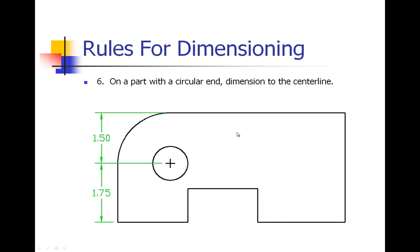Number six: on a part with a circular end you should dimension to the center line. So we put our center mark in and we have a little gap there, and we should dimension to the center line. So we would have to delete out that little piece of center line and go right to that center mark. And then the other end of that obviously is going to the top of the part, and that will help you place the circle so we know that the center point of that circle is 1.50 inches down.